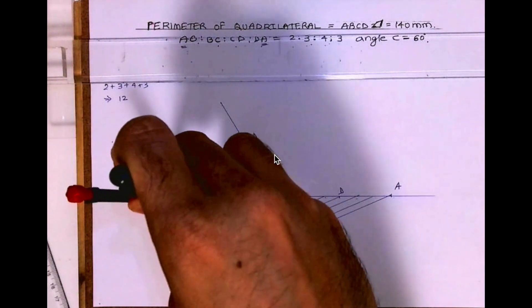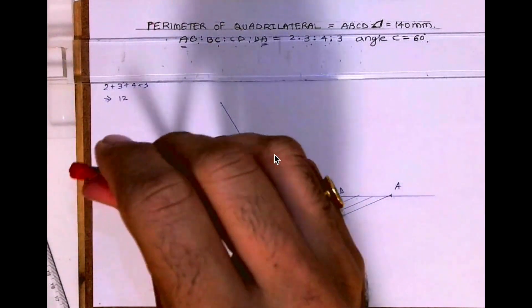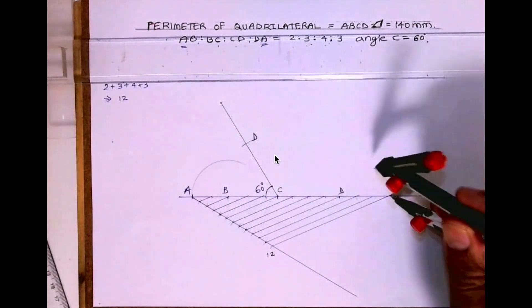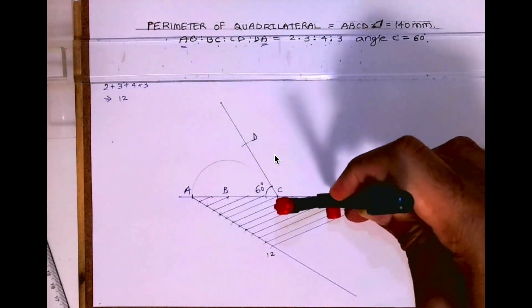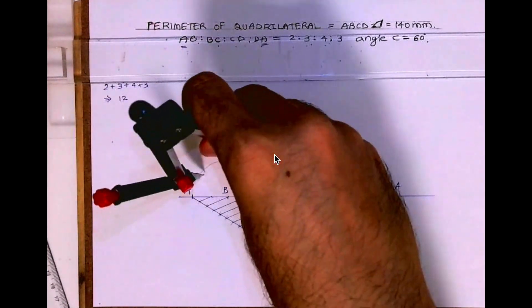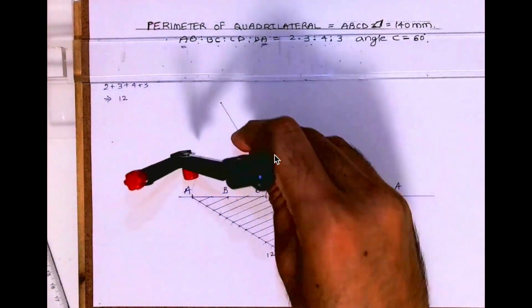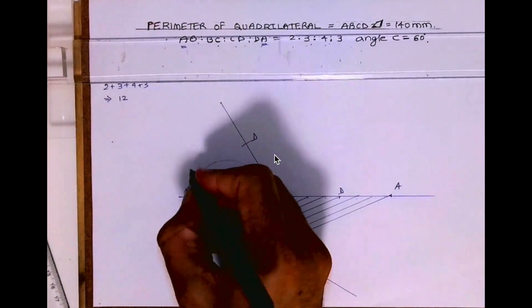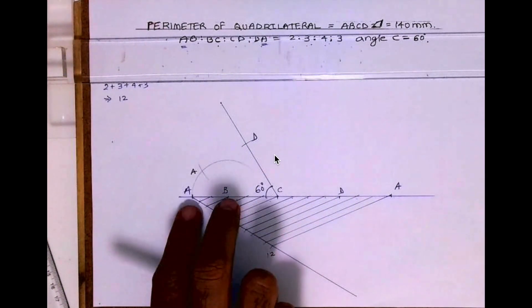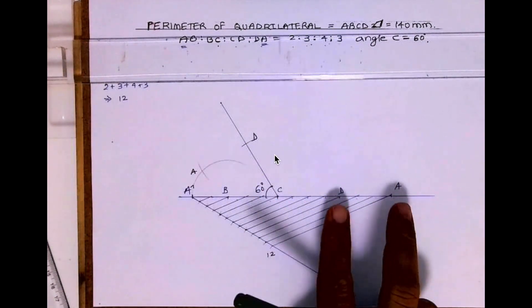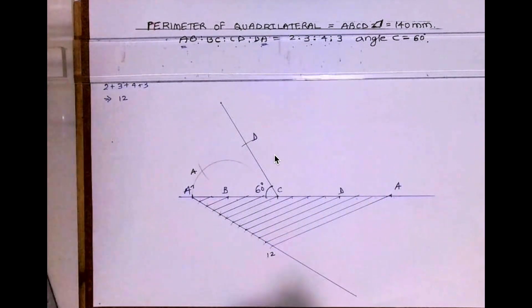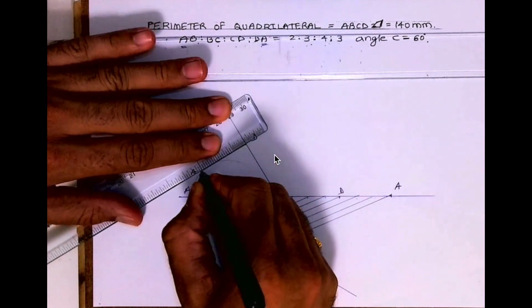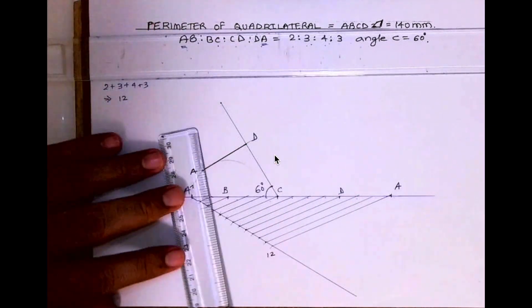We'll take BA, rotate, and take A to D. From D you cut, so we'll get point A. Then you join A to B. We rotated from B using BA and DA distances and cut to get the intersection. Then join points DA and BA, and we'll get the required quadrilateral.